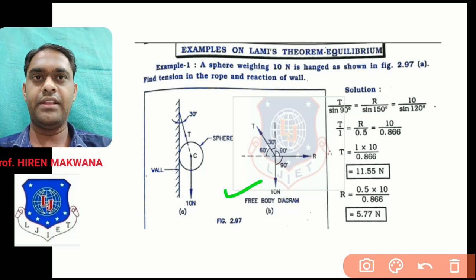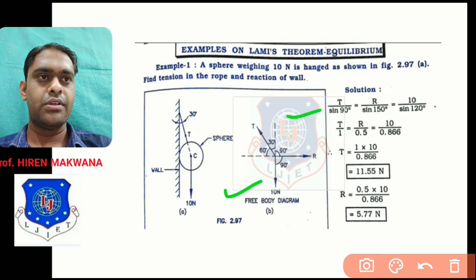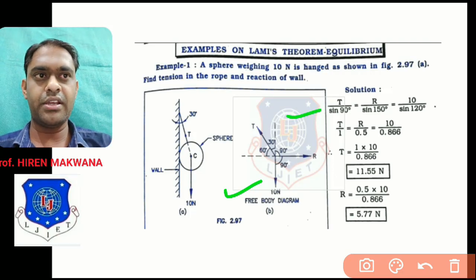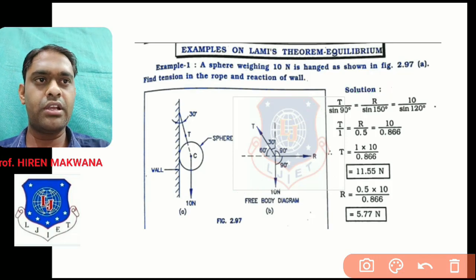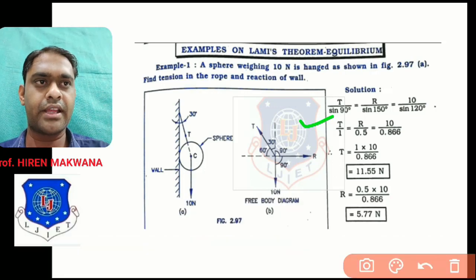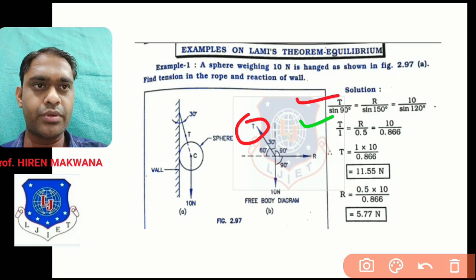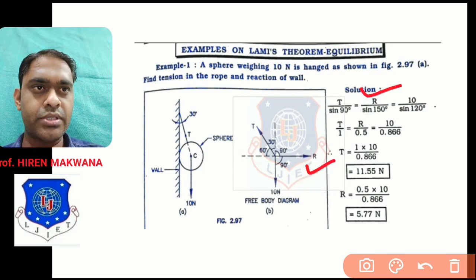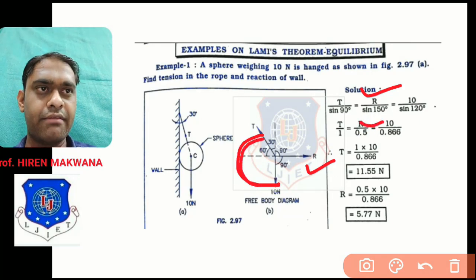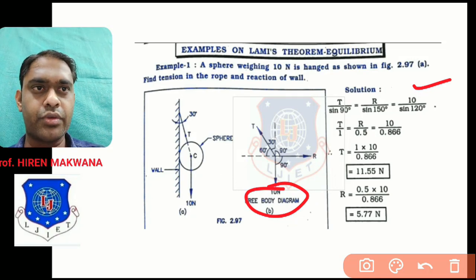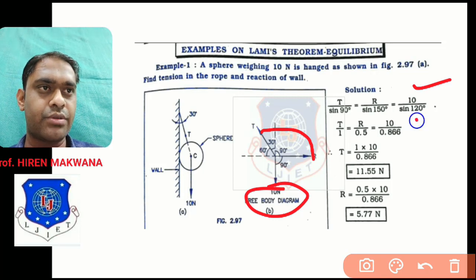These sums need much practice. Applying Lamy's theorem: there are three forces — T (tension), R (reaction), and 10 Newton (weight). In the denominator, take the opposite angles. For T, the opposite angle is 90, so T divided by sin 90. For R, the opposite angle is between T and weight: 60 plus 90 equals 150, so R divided by sin 150. For weight 10, the opposite angle is 90 plus 30 equals 120, so 10 divided by sin 120.